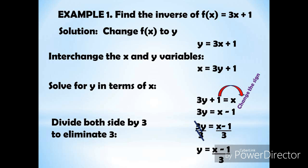Then interchange the x and y variables — swap the positions of x and y. So we now have x = 3y + 1. Then solve for y in terms of x. Transpose 1 to the other side, changing its sign, so it becomes 3y = x − 1.